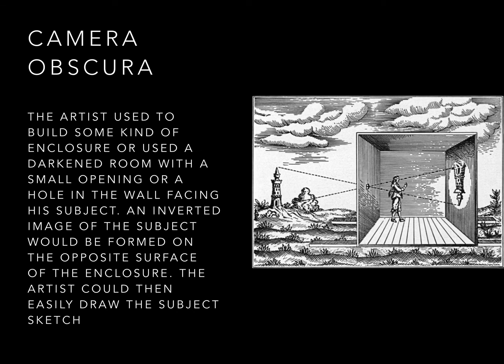Camera Obscura: the artist used to build some kind of enclosure, or used a darkened room with a small opening or hole in the wall facing his subject. An inverted image of the subject would be formed on the opposite surface of the enclosure, and the artist could then easily draw the subject sketch.